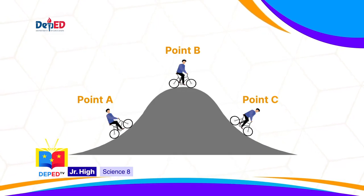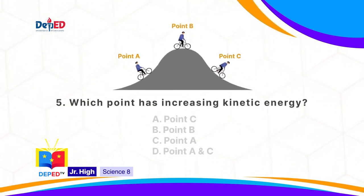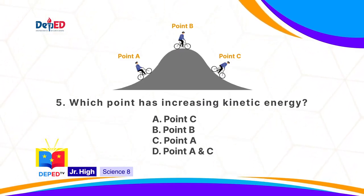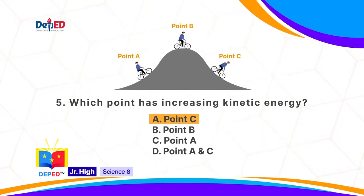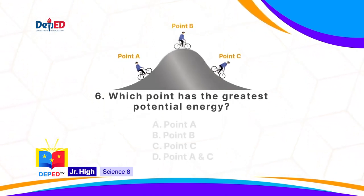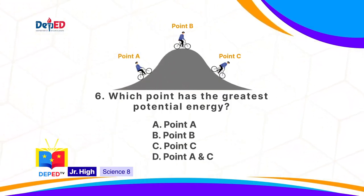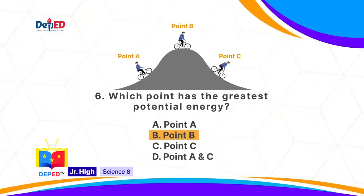For questions 5 and 6, refer to this illustration. Which point has increasing kinetic energy? A. Point C. B. Point B. C. Point A. Or D. Point A and C. The correct answer is A: Point C. Which point has the greatest potential energy? A. Point A. B. Point B. C. Point C. Or D. Point A and C. The correct answer is B: Point B.